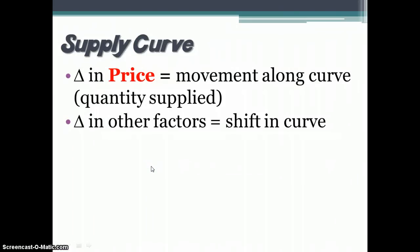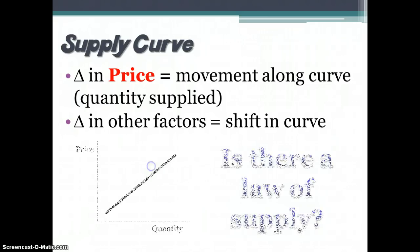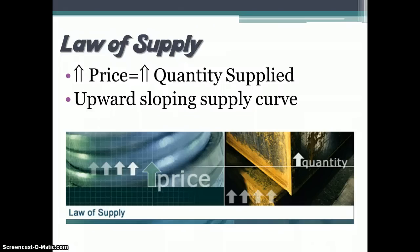As there is a change in price, there is a movement along the supply curve, and that movement is generally positively correlated. If there is a change in any other factor, we'll see a shift in the supply curve. There is a law of supply — it's not ironclad like the law of demand, but there is a general correlation so that when price rises, the quantity supplied will also increase. That's what gives us an upward sloping supply curve.